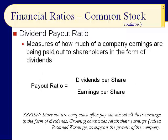Slide fifteen: the dividend payout ratio — again, review. This measures how much of a company's earnings are paid out to shareholders as dividends. You take dividends per share and divide by earnings per share. A more mature company will often pay out most of their earnings as dividends — utility companies, for example, aren't growing much so they don't need the cash. Growing companies retain their earnings — accountants call this retained earnings — because they need the money to support the company's growth.